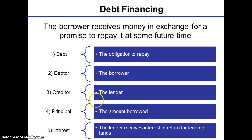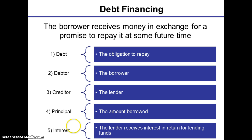The lender receives interest in return for lending his funds, and this interest may be paid periodically, which is every six months or every year — which is annual repayment of interest — while for some other types of debt the interest may also be paid at the end of the maturity period or the specified period.